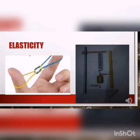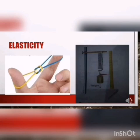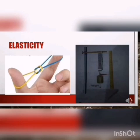As we see in the figure, the applied force changes the length, shape, or volume of a substance — this force is known as the deforming force. In the case of the rubber band, the deforming force changes its shape, length, and volume, causing it to expand. Similarly, when we tie a weight to a spring, the applied force causes an increase in the length of the spring.